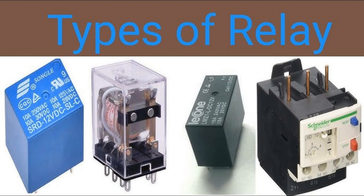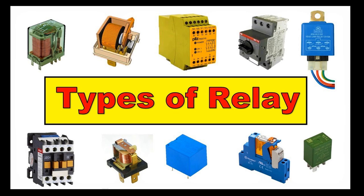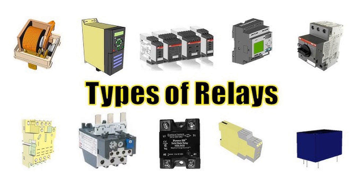Types of solid-state relays: Zero-crossing SSR — switches the load only at the zero-voltage crossing point of the AC sine wave, minimizing electrical noise, ideal for resistive loads like heaters. Random turn-on SSR — can switch the load at any point in the AC cycle, suitable for inductive loads like motors. DC-SSR — designed for DC circuits, typically using MOSFETs for switching. Key characteristics: Switching speed — SSRs are extremely fast, capable of switching in microseconds. Longevity — with no mechanical contacts, SSRs experience no wear due to physical movement, extending their operational life.